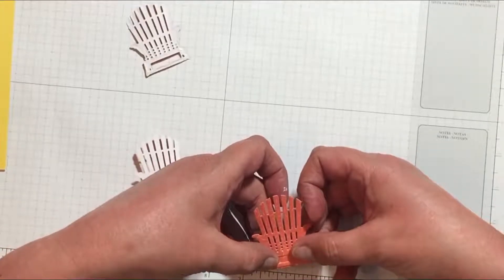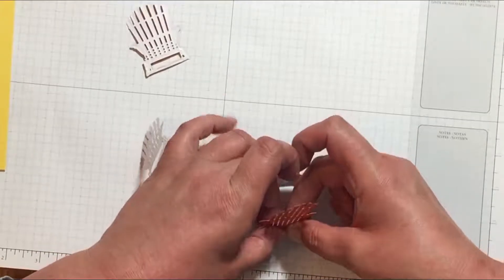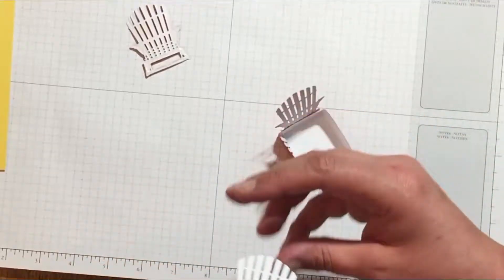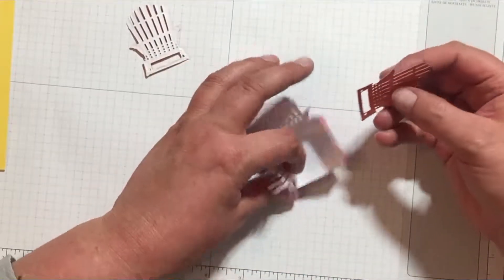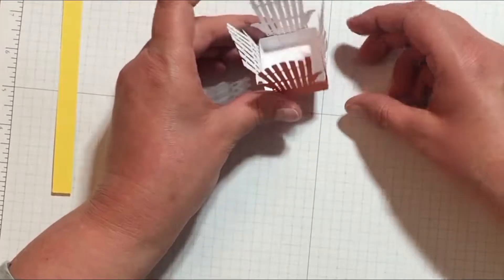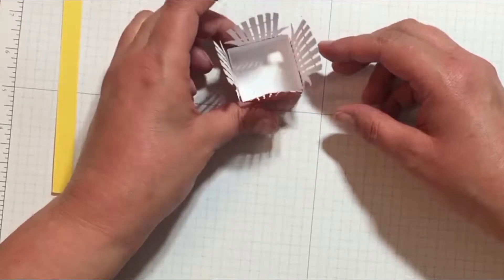You might also want to pay attention to where you're putting your hands when you're putting this box together. Notice how I just stuck my hand right onto that chair piece. Oh well, it held it nicely for me until I needed it. Now that the basket base is finished, let me show you an easy way to decorate it before you attach the handle.